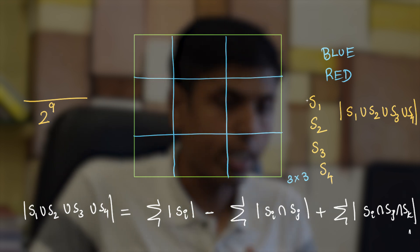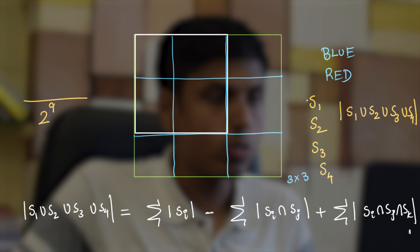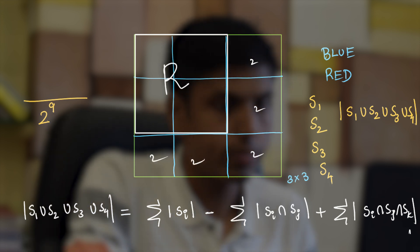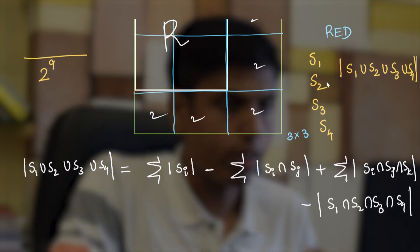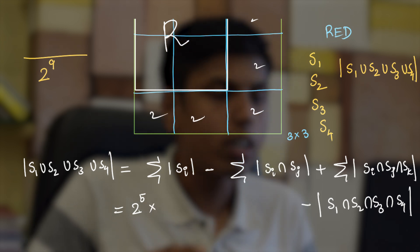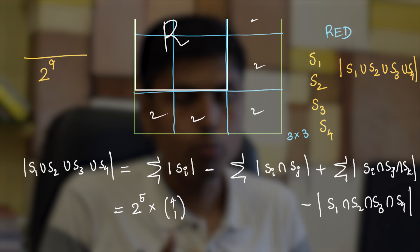So what we will be finding is the cardinality of S1. Let's assume that the top left is completely red, so we have two possibilities for all the remaining squares which amounts to 2 to the power 5 in number. So this is 2 to the power 5, but there are four of them or four choose one of them, and we multiply it by four choose one.